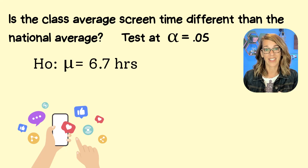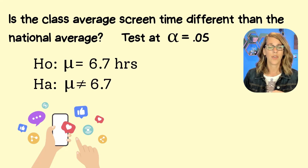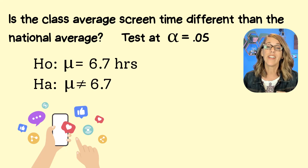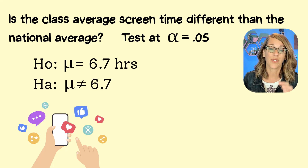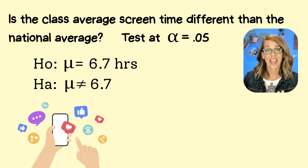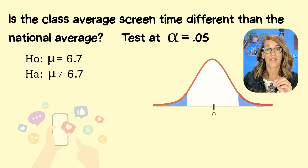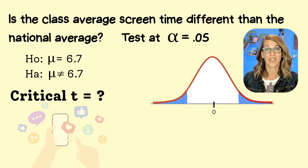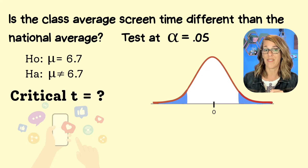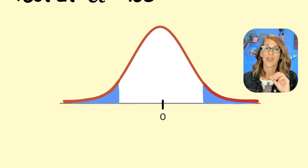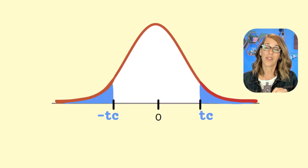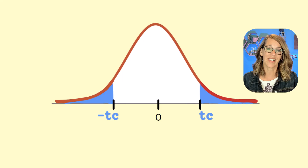The alternative hypothesis, since we're looking to see if ours is different, would be mu not equal to 6.7. The TI-Nspire is going to find everything we need to conduct this test, starting with those critical t values. This test is two-tailed, so we have two critical values — one negative and one positive.